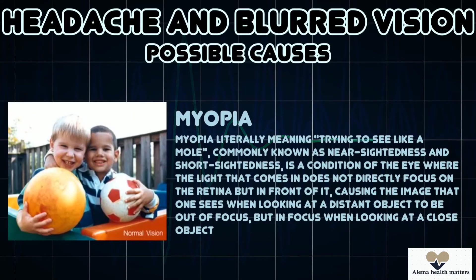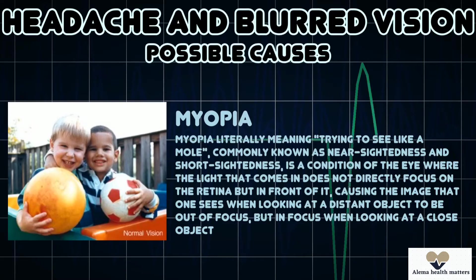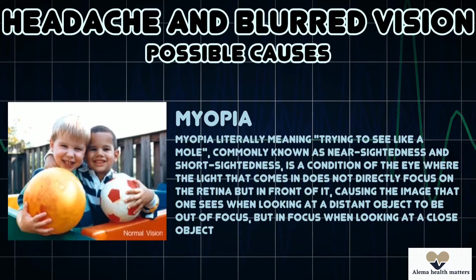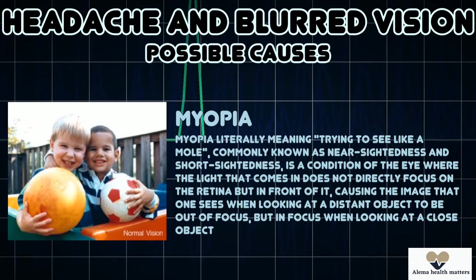Myopia — myopia literally means trying to see like a mole — is commonly known as near-sightedness or short-sightedness. It is a condition of the eye where the light that comes in does not directly focus on the retina but in front of it. This causes the image one sees when looking at a distant object to be out of focus, but in focus when looking at a close object. Myopia is a common cause of headache and blurred vision.